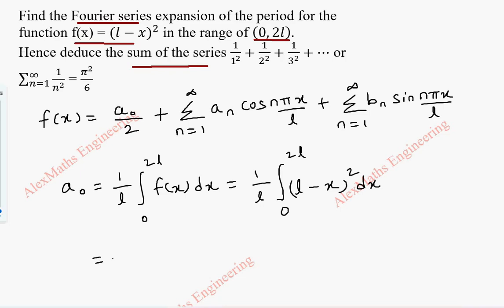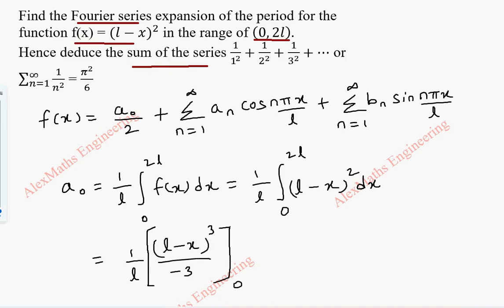This is (1/L). The integration of (L − x)³ is (L − x)³ / 3, and there is a minus sign for x, so we have to divide by minus 1, giving minus 3 in the denominator. We have the limit from 0 to 2L.